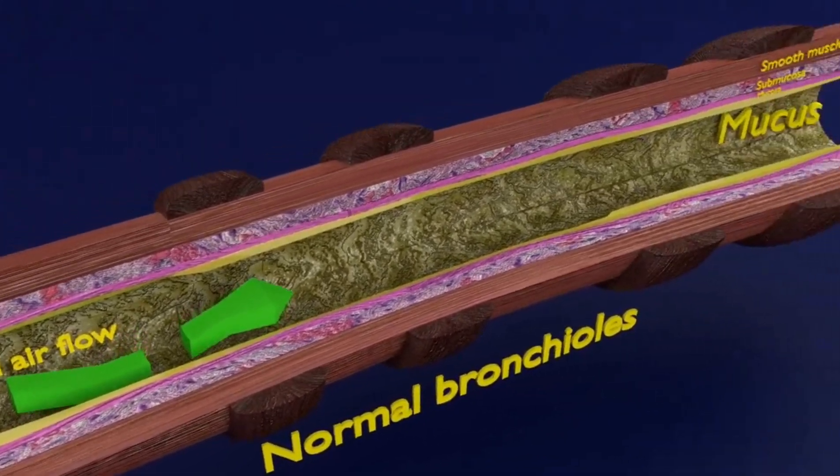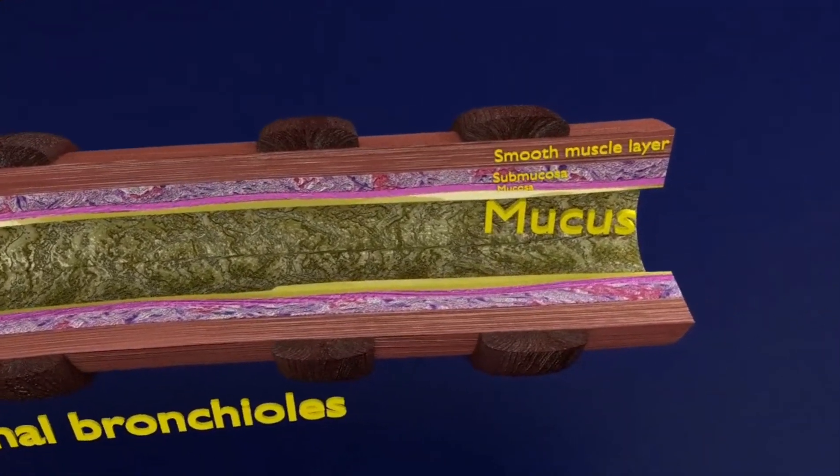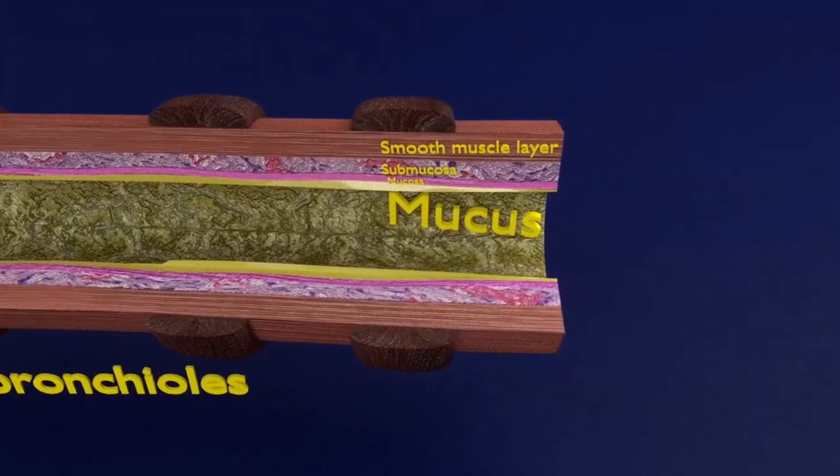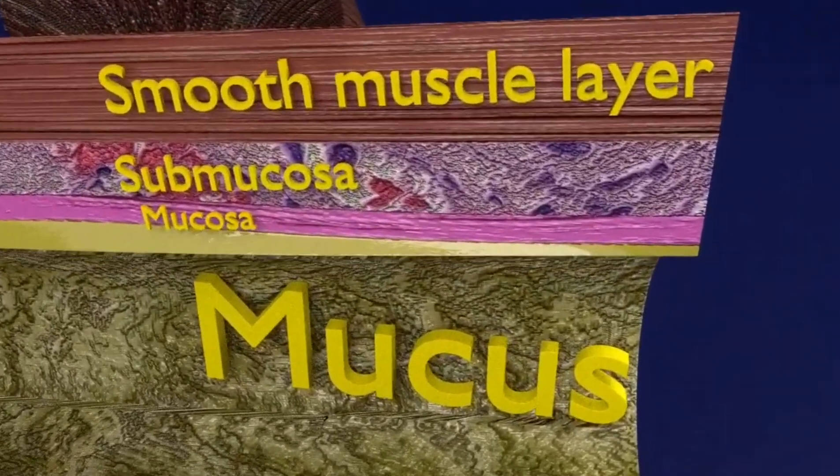The bronchial wall, as you see here, is made from inside to outside of a thin mucous layer, mucosa, submucosa, and smooth muscle cell layer.